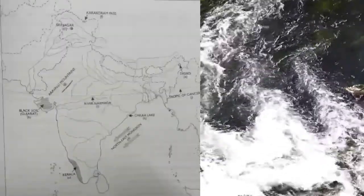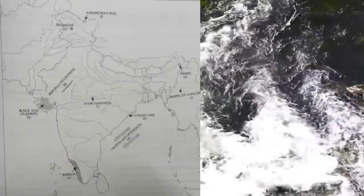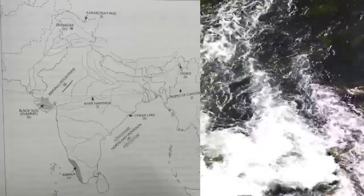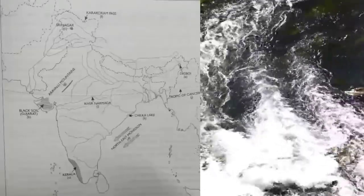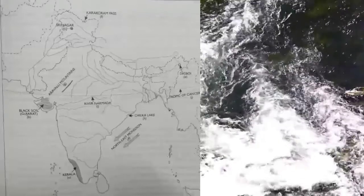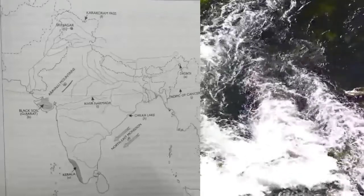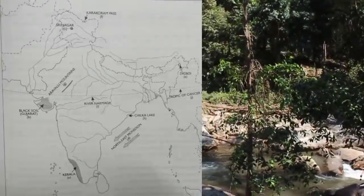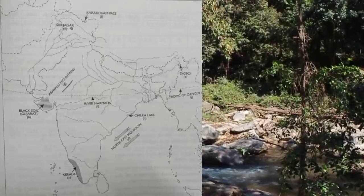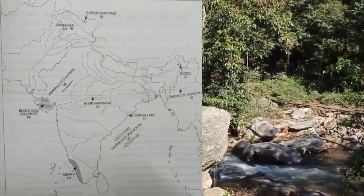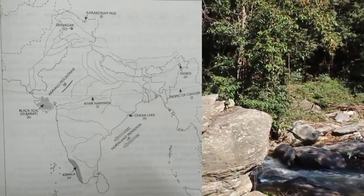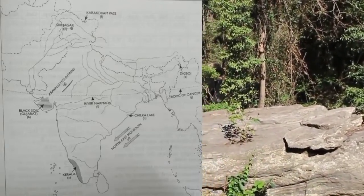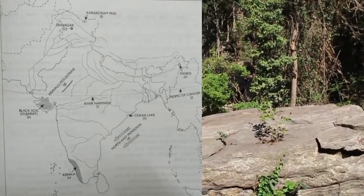Mark and name the densely populated state in South India — that is Kerala. 'B' — mark and name the region with black soil. 'C' — mark with a dot and name Srinagar.